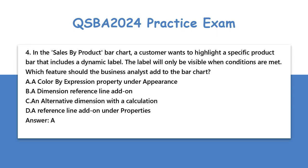A. A color by expression property under Appearance. B. A dimension reference line add-on. C. An alternative dimension with a calculation. D. A reference line add-on under Properties.